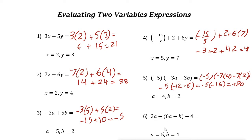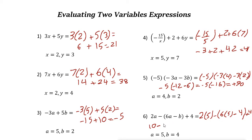For the last example, a equals 5 and b equals 4. The expression is 2a minus 6a minus b plus 4. Substituting: 2 times 5 is 10, minus 6 times 5 is 30, minus b is 4, plus 4. The plus 4 and minus 4 cancel out, leaving 10 minus 30, which equals negative 20.